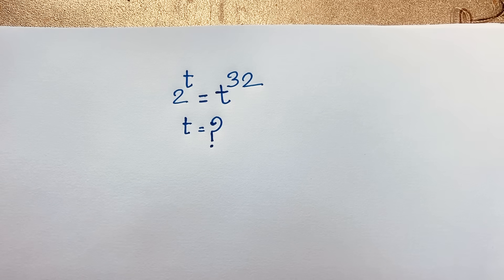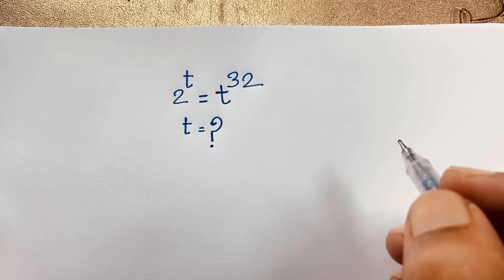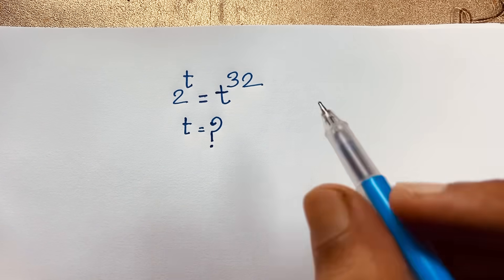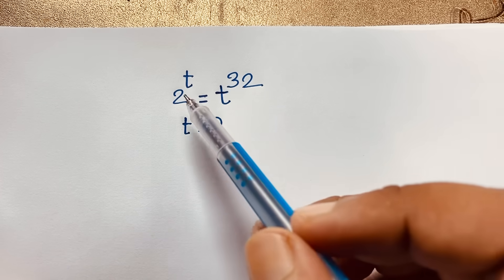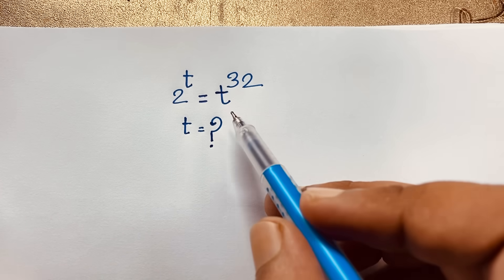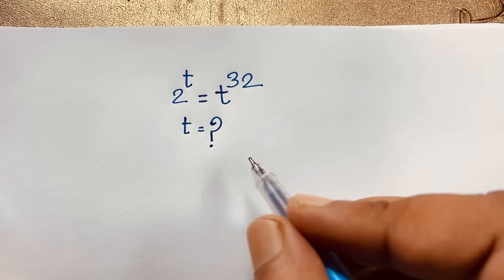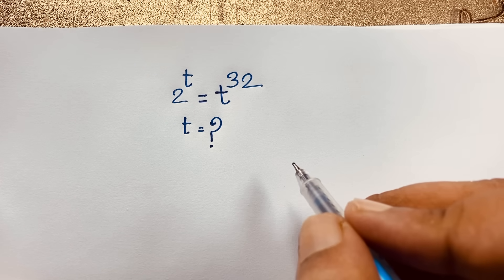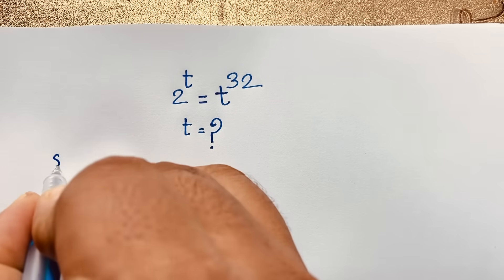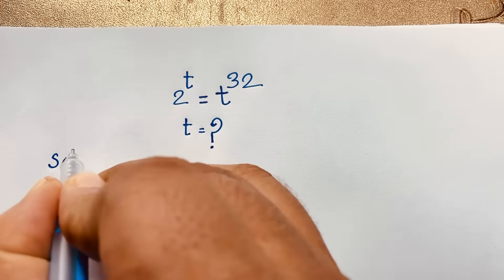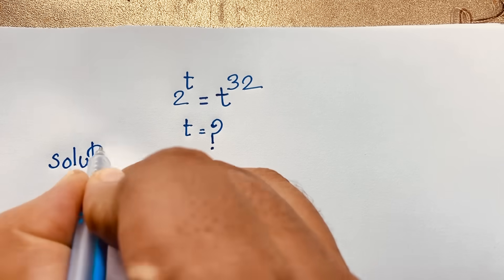Hello everyone, welcome to my YouTube channel — welcome to Russia's Classroom. Today we are solving an interesting exponential math olympiad question: 2 to the power t is equal to t to the power 32. What is t? Let me show you how to solve this interesting viral math problem step by step.